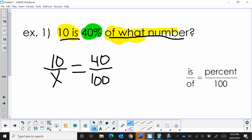Now how to solve this? To solve any proportion, you're going to cross multiply. So I'm going to take 10 times 100, and I'm going to set that equal to this side, which is 40 times x.